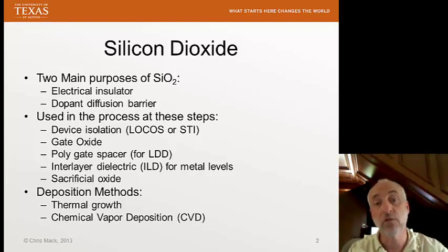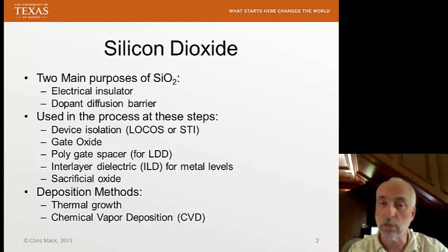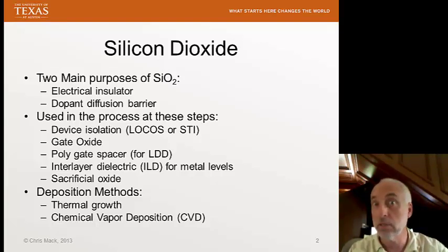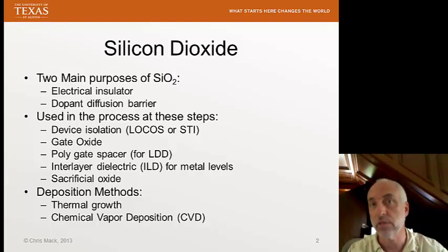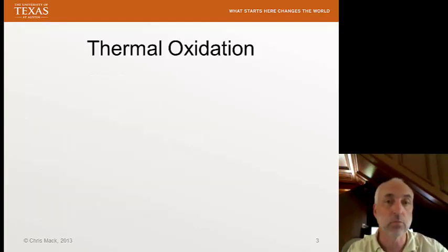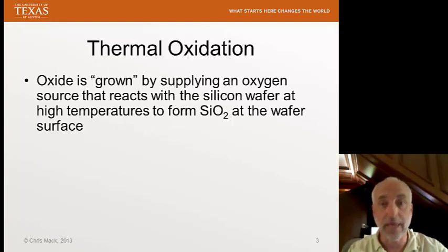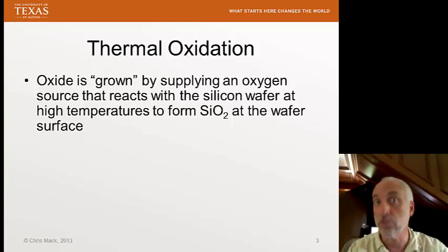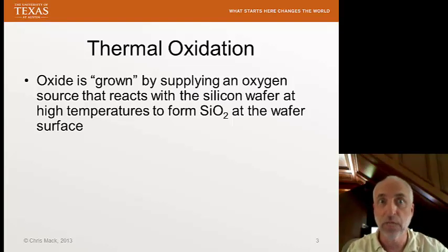There are two main methods for depositing silicon dioxide. What we're going to talk about today is thermal growth of silicon dioxide. Later in the semester, we'll talk about chemical vapor deposition used for silicon dioxide and many other materials we need to deposit on our wafer. The thermal oxidation process is an oxide growth — we supply oxygen to the surface of the silicon wafer, it reacts with the silicon at the surface, and silicon dioxide is formed there. It literally grows on top of the silicon.